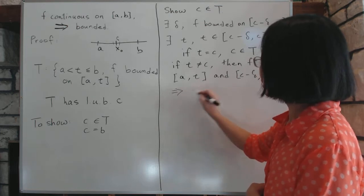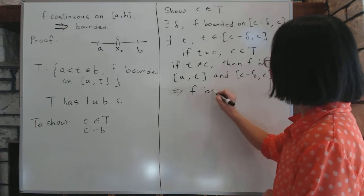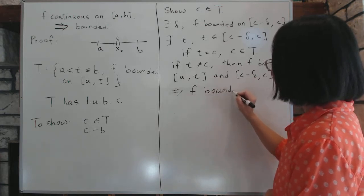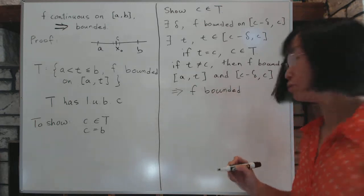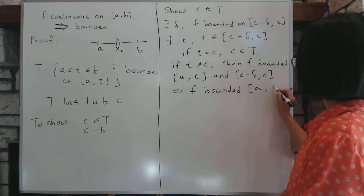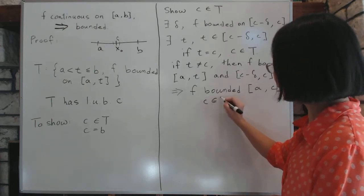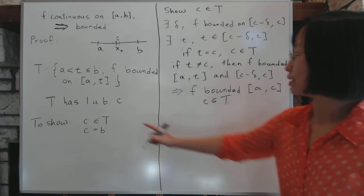That means F is bounded in the whole thing. Okay, the union of these two intervals. I'm not quoting principle two, bounded on the whole thing, from A all the way to C. And that, by definition, means C is an element of T. That's the first part.